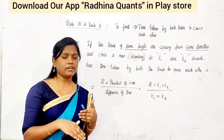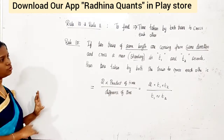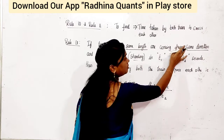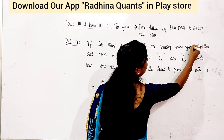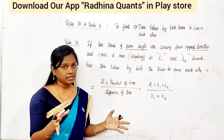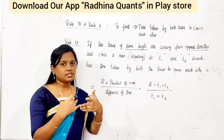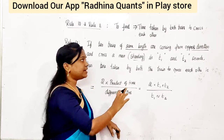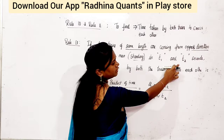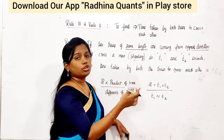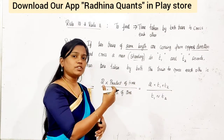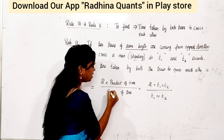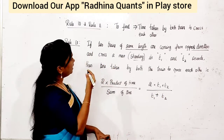Rule 11: there are two trains of the same length moving in the opposite direction towards each other. They cross a standing man — the first train in T1 seconds, the second train in T2 seconds. Find the time taken by both trains to cross each other. In the opposite direction, the denominator becomes T1 plus T2 — the sum of time instead of the difference. This is Rule 11.